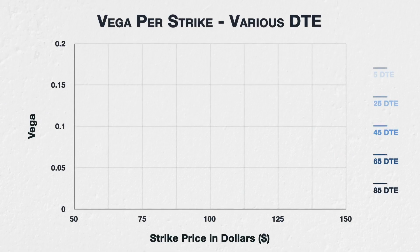Another variable that has a major influence on vega is how much time is left before the option expires. Even if all other things remain completely static, the simple passage of time will have an effect on the vega of an option.